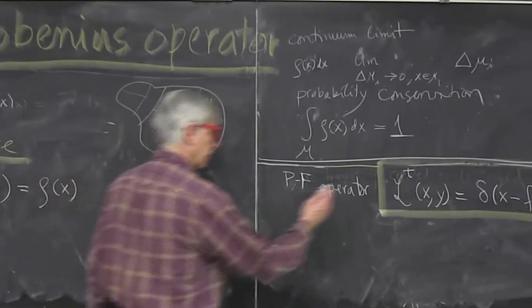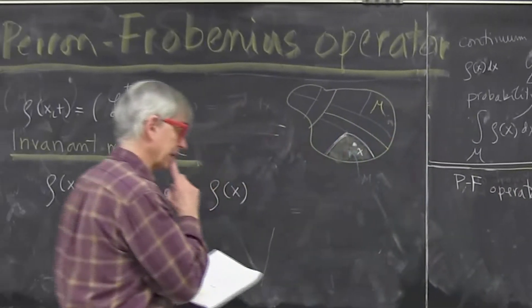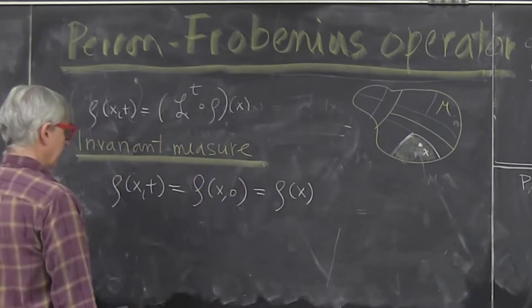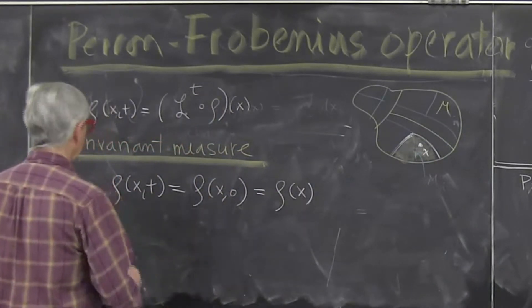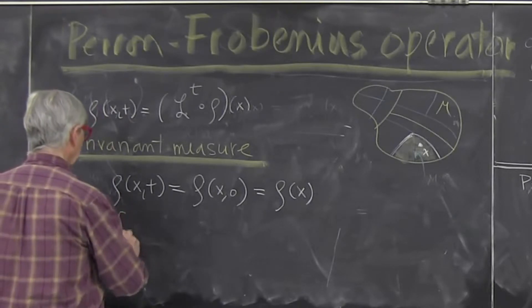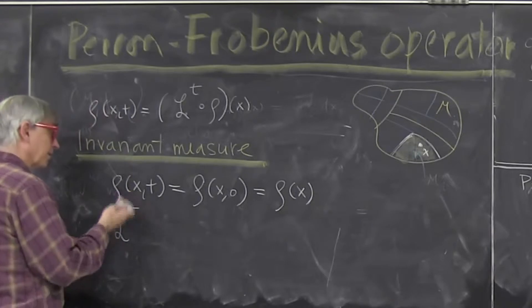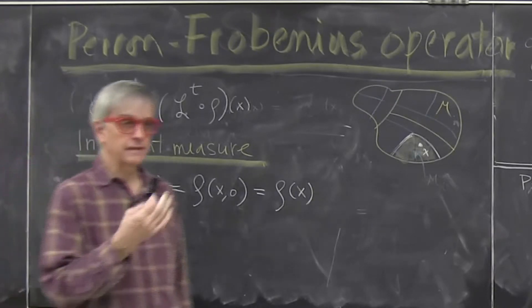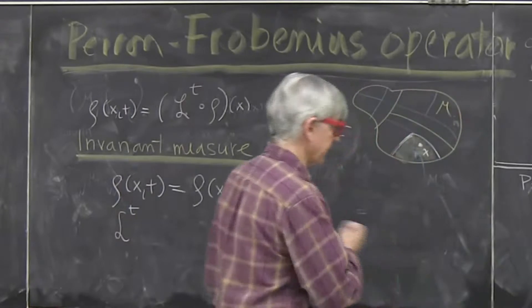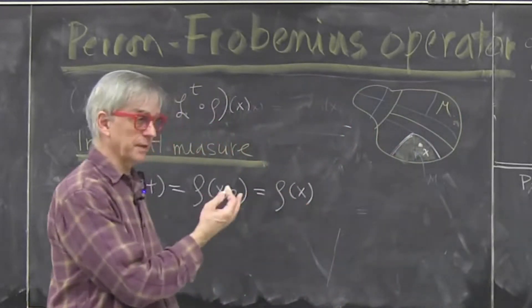It turns out that Perron-Frobenius operator is really useful way to think about it. That's why we introduced it. So what does Perron-Frobenius say? If I act, and now, this is an operator. Now again, operators are not very fancy thing. It just means there's some derivatives. I'll make it very explicit.